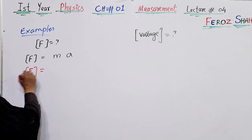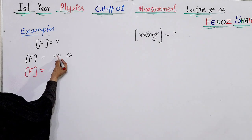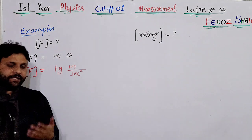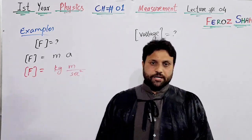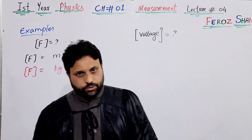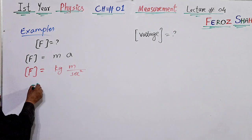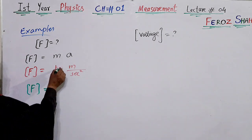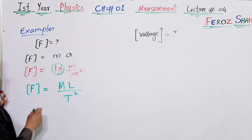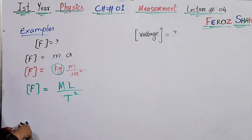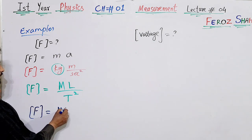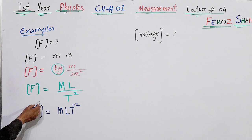Step three: convert the right-side quantities into their units — mass unit is kilogram and acceleration unit is meter per second squared. Step four: convert all units to base units. Here kilogram, meter, and second are already base units, so no conversion is needed. Step five: replace base units with symbols — kilogram is replaced by M, meter by L, second by T, giving M·L/T². Step six: shift T² to the numerator, giving the dimension of force as M·L·T⁻².